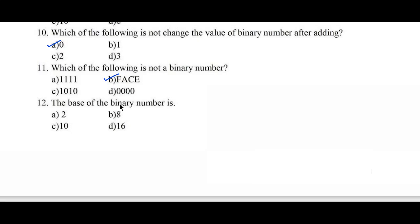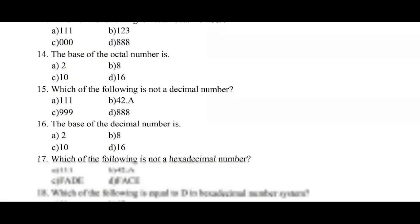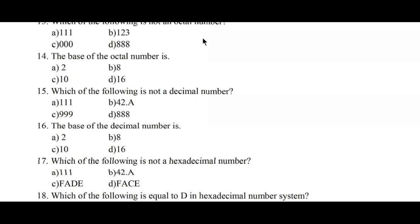Question number twelve: the base of a binary number is — options A) 2, B) 8, C) 10, D) 16. The base of a binary number is always 2 because we represent bits as either 0 or 1, hence option A is the right answer.